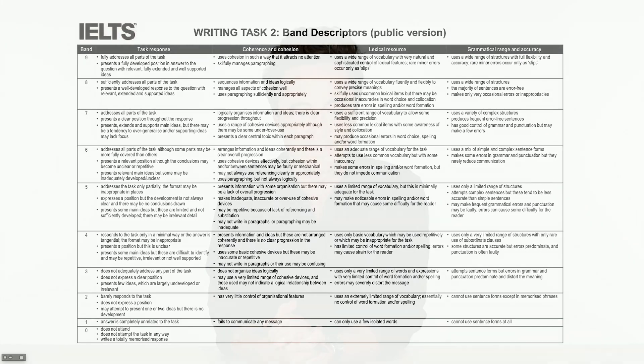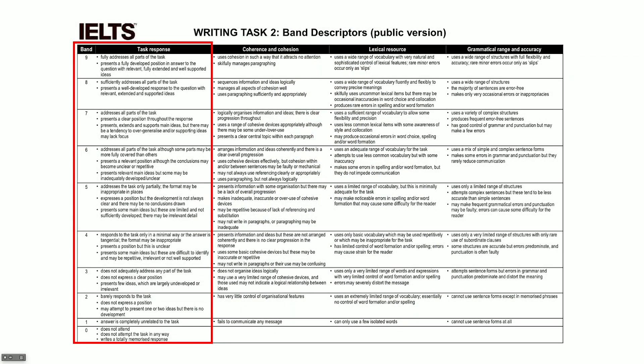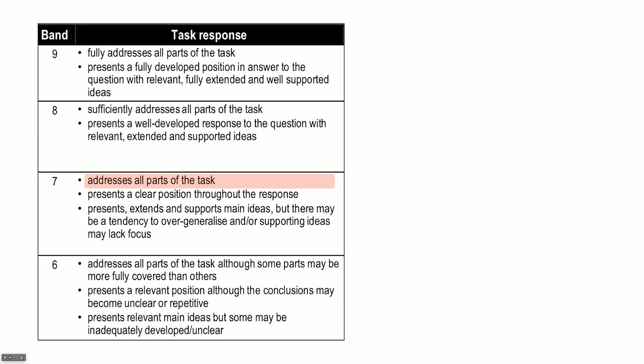These are called the band descriptors. This is what the IELTS examiners are looking at while they're marking your writing — they have a few minutes to do it. Let's look at task response first, or what I call topic. So imagine I'm the IELTS examiner looking at your writing. In your essay, you addressed all parts of the task — well done. You presented a clear position throughout the response, and you extended and supported your main ideas. But there was a tendency to overgeneralize and lack a little focus. So for topic, I'm going to give you a seven.